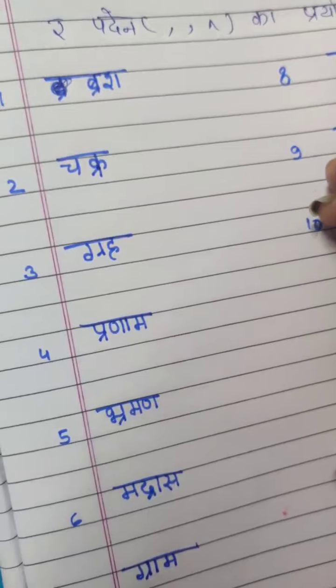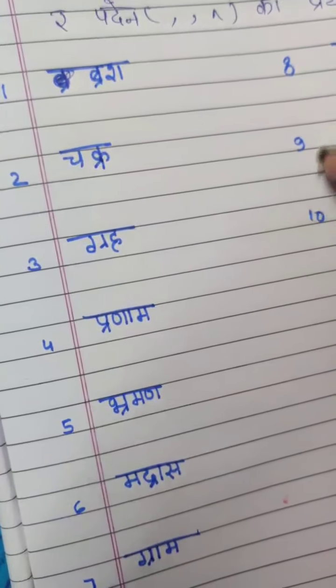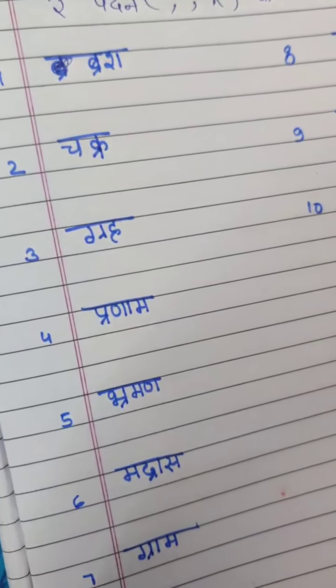And the letters which are not having standing line like T, we put Padeen ki matra like this and Ka, it became Truck.